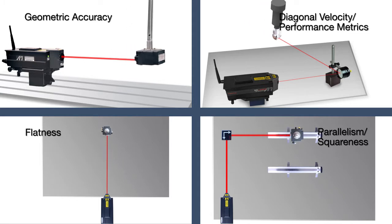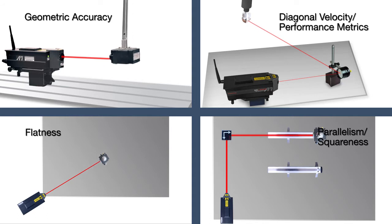With one XD, you can measure for geometric accuracy, diagonal velocity and performance metrics, flatness, parallelism and squareness, and more.